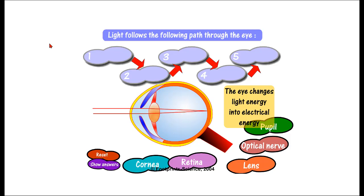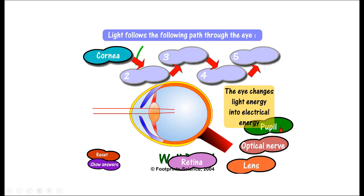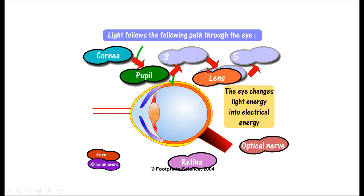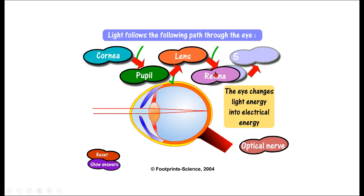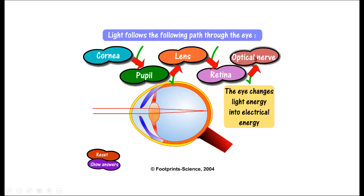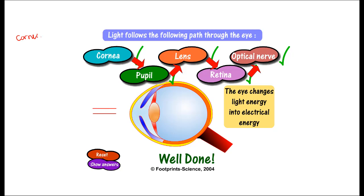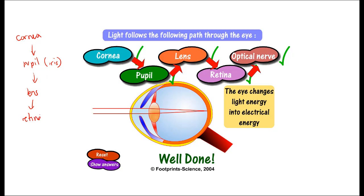Now looking at how light is focused on the retina and how the amount of light entering the eye changes. Light first enters through the cornea, then travels through the pupil, gets focused by the lens, hits the retina, and the retina converts it into an electrical impulse sent along the optic nerve to the brain. The cornea refracts light, the iris controls pupil size controlling the amount of light, the lens focuses it, and the retina generates the impulse.